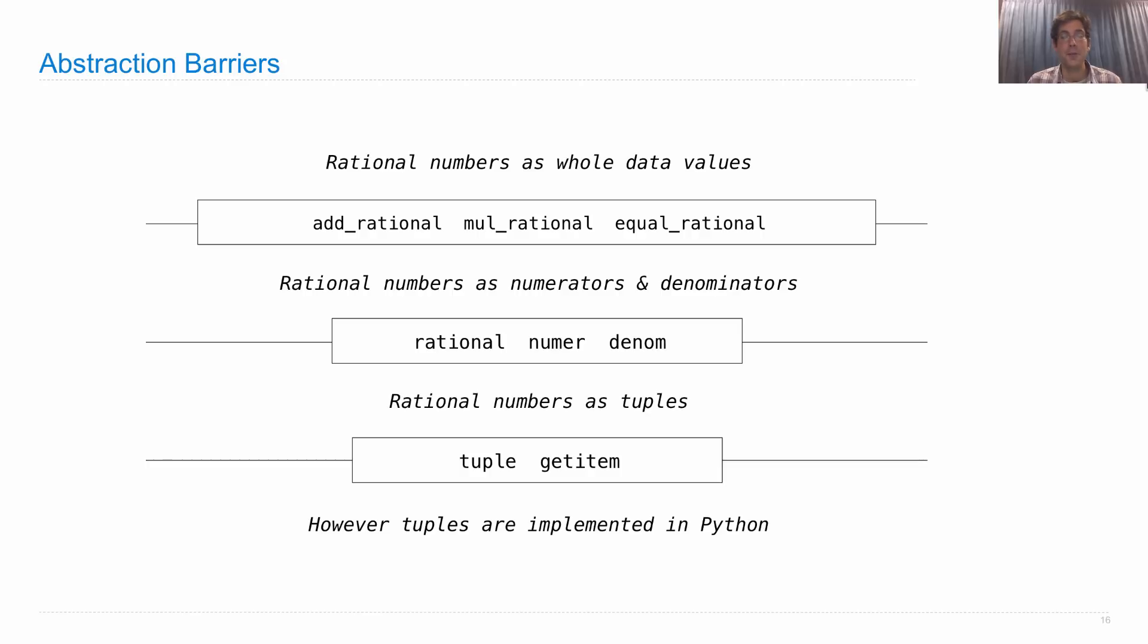Finally, we know we have an interface for interacting with tuples, which is through the get item function, or the bracket notation, and through tuple literals, but we're actually not privy to exactly how those are implemented in Python, and we really don't care. What we do care about is that they work as we were told.